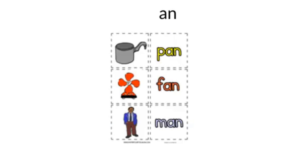Now let's take a look at some of the words with AN. Look at the first one — what's this? Pan. Look at the word pan: P, AN — pan. Look at the second picture — what's this? Fan. Look at the word fan: F, AN — fan.